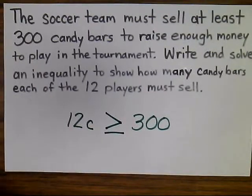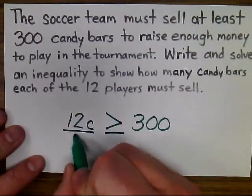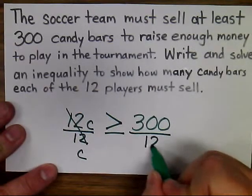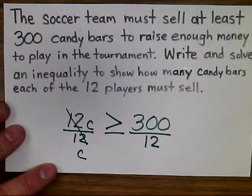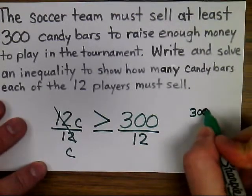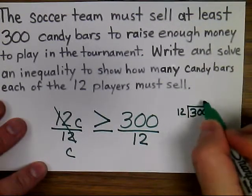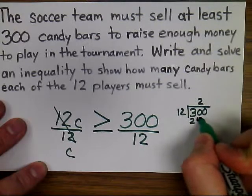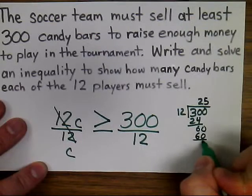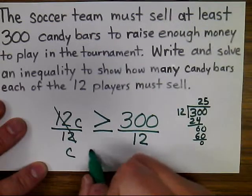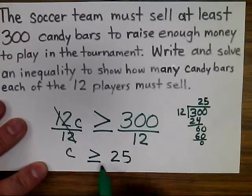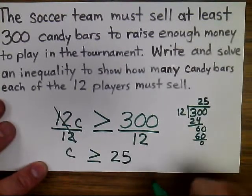Now to solve it, I'm going to isolate my variable by dividing this side by 12, leaving me with just C, and dividing this side by 12. Now 300 divided by 12 might be a term you don't know, so off to the side you would actually divide 300 divided by 12. And there we have it. Each player must sell greater than or equal to 25 candy bars.